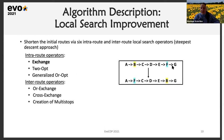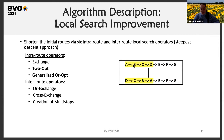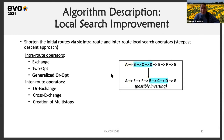The intra-route operators operate on a single route. The exchange operator takes two nodes and exchanges their positions — for example, nodes B and F are swapped. The 2-opt intra-route operator takes a sub-route and inverts it. The generalized or-opt intra-route operator takes a sub-route and tries to move it somewhere else within the same route, possibly also inverting the sub-route if it leads to a better improvement.